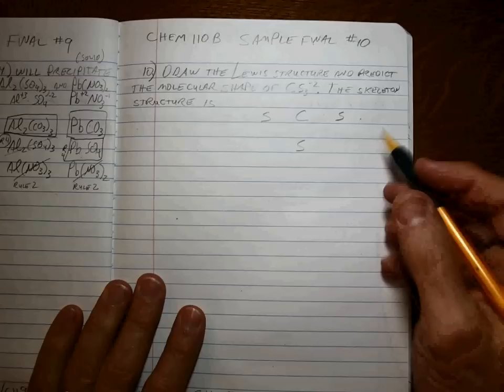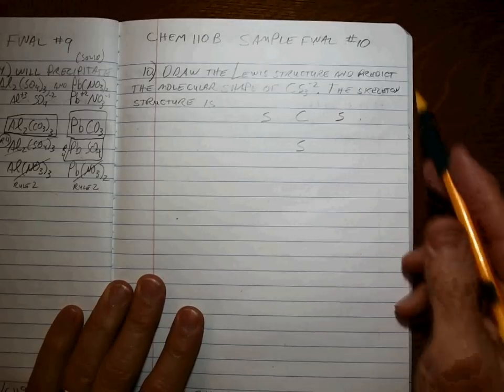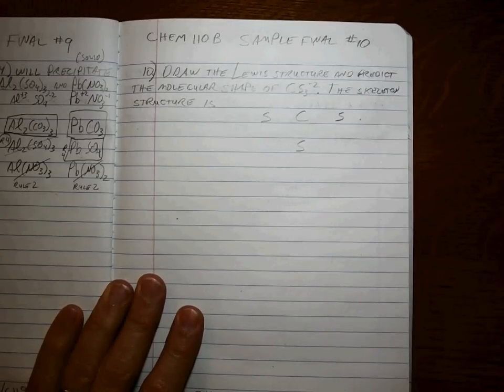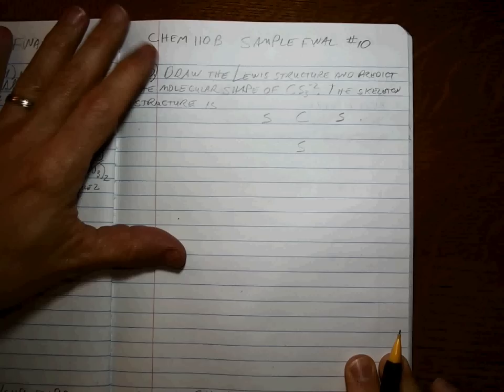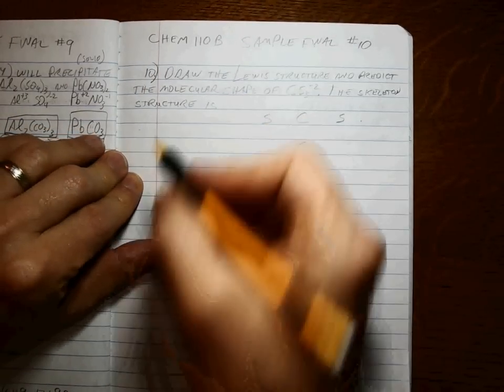Chem 10B sample final number 10. We're drawing Lewis structure and predicting the shape for this polyatomic ion. Alright, so we know what I have to do first. Lewis dot structure.